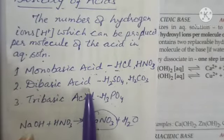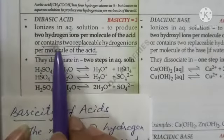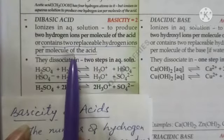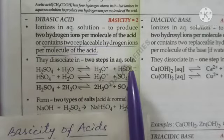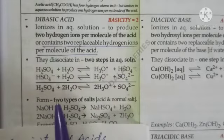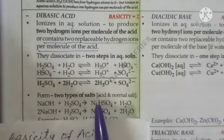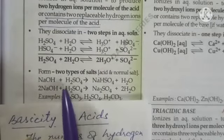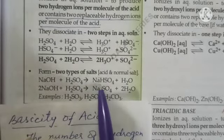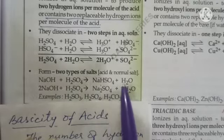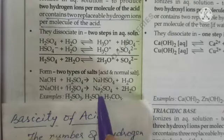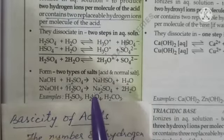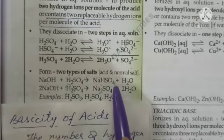Dibasic acids contain two replaceable hydrogen ions per molecule. They always dissociate in two steps in aqueous solution, and that is why they form two types of salts. For example, when sodium hydroxide reacts with sulfuric acid, it first gives sodium bisulfate — that is the acid salt — and water. When NaOH replaces both hydrogen ions, it forms the normal salt, sodium sulfate, and water.